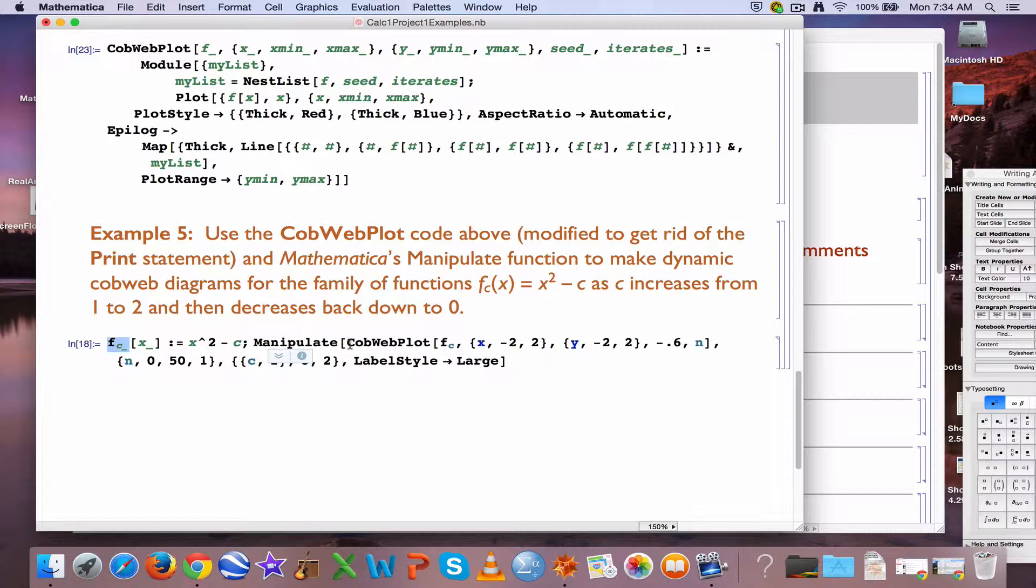You make a cobwebplot for any fixed value of c, but by putting it inside this manipulate, that allows me to animate it and change the value of c and see what happens as c changes, and that's what's ultimately the most interesting. N is another animation parameter for manipulate. You can see c is starting at 1, but I let it go as low as 0 or as high as 2. N starts at 0 and goes up to 50 in increments of 1.